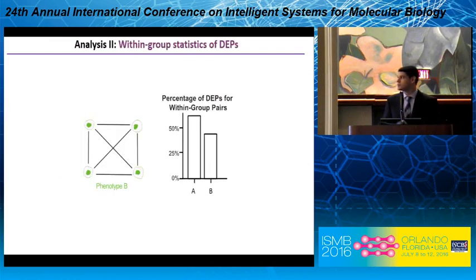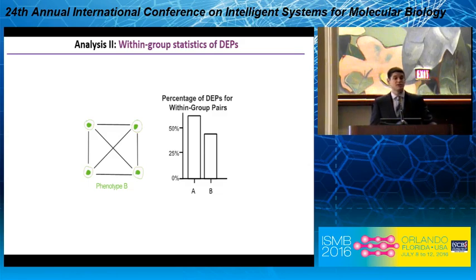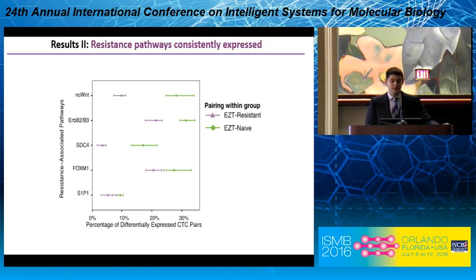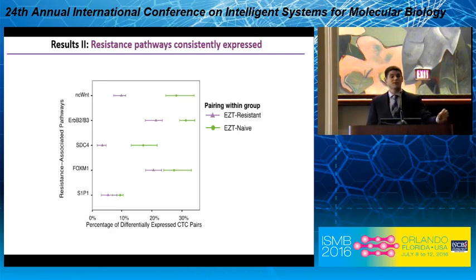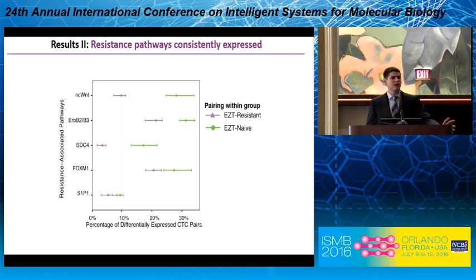The second analysis looks at within-group pairs. Within a phenotype, you look at all pairs, but here the direction is arbitrary — so we focus on the abundance of differentially expressed pathways, not the direction. In this toy example, phenotype A is more differentially expressed, suggesting that pathway may not be as important for manifesting that phenotype. Looking at the five resistance-associated pathways, resistant cells were much more consistently expressed in these pathways — especially SDC4, which was very tightly regulated. So the cross-group identified these pathways, and the within-group offered a different perspective on which pathways are most consistently expressed.